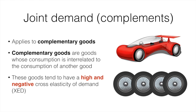Should the price of cars rise, ceteris paribus, then we would anticipate a fall in the demand for car tires. On the other side, if the price of cars were to fall, ceteris paribus, we would anticipate an increase in the demand for car tires.